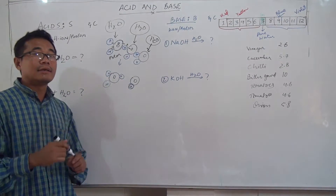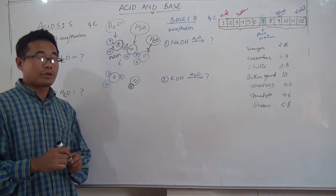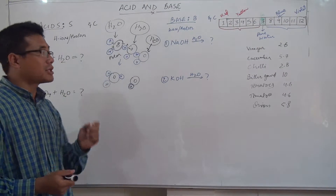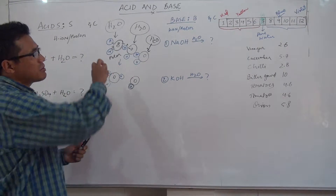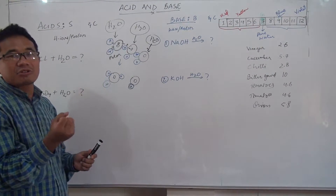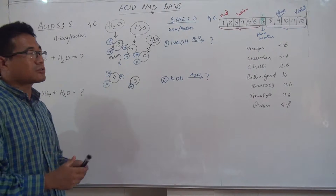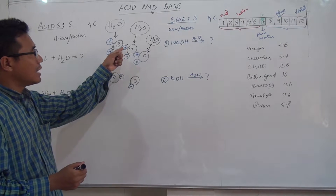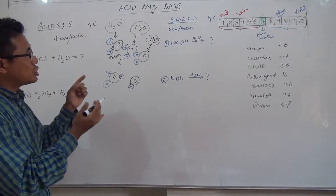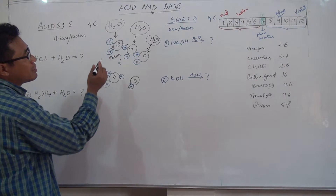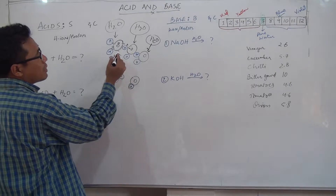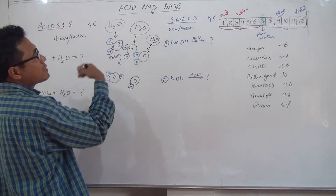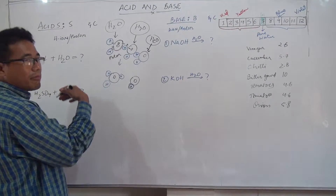Unlike ionic attraction, where one atom steals electrons from another, here they don't steal — they share. But there is always a polar aspect: one part is more negative and the other part is slightly positive.